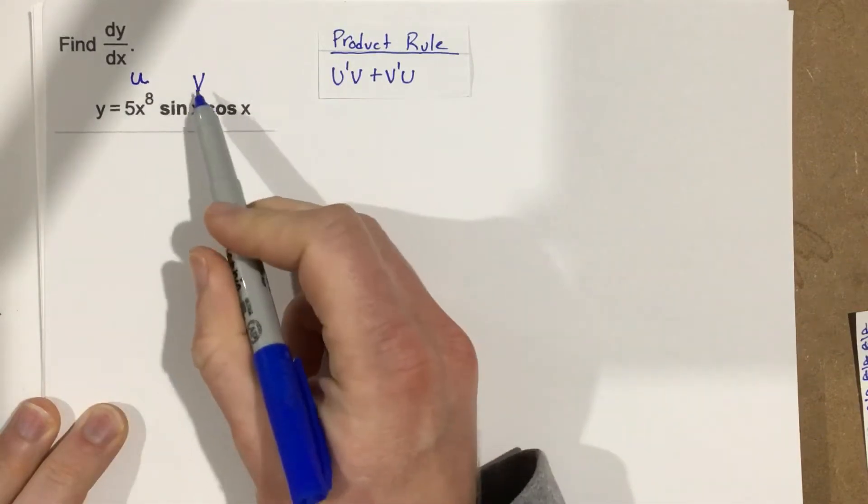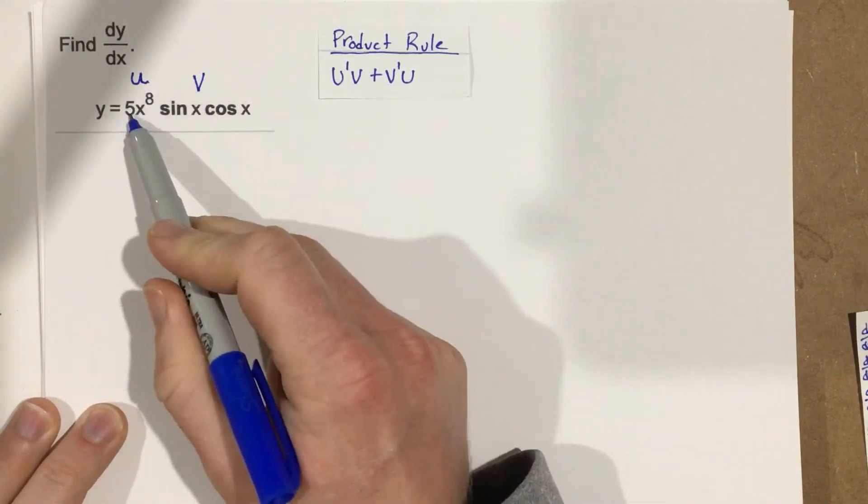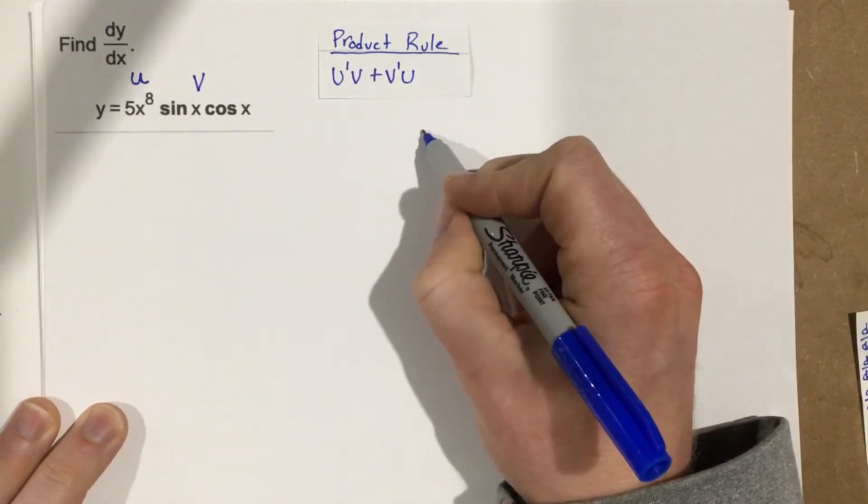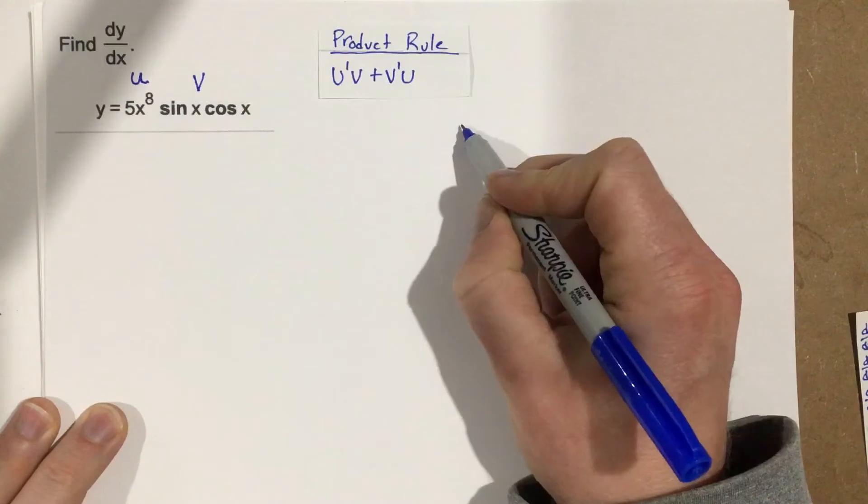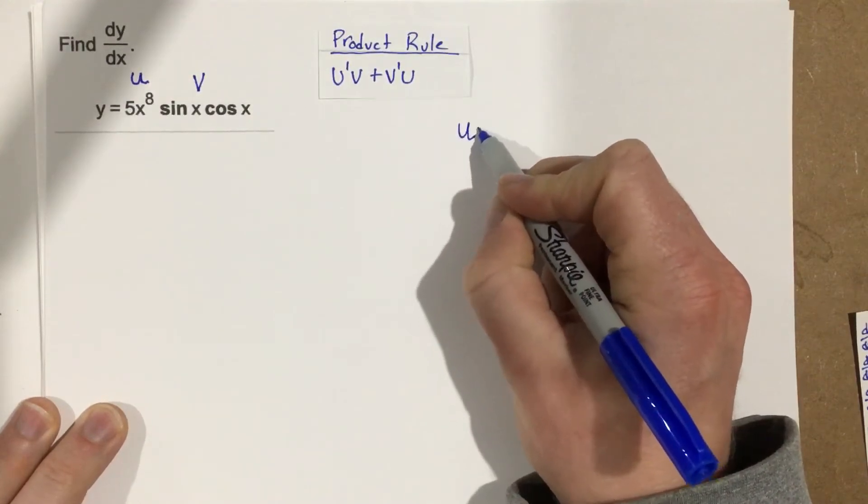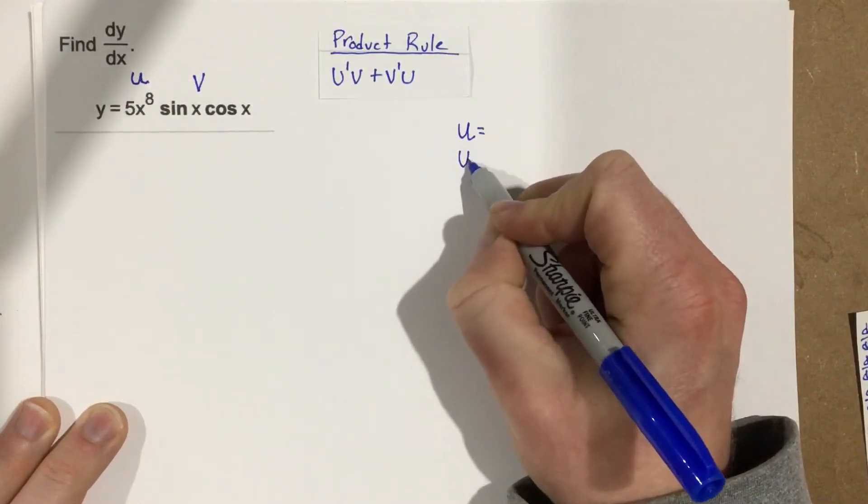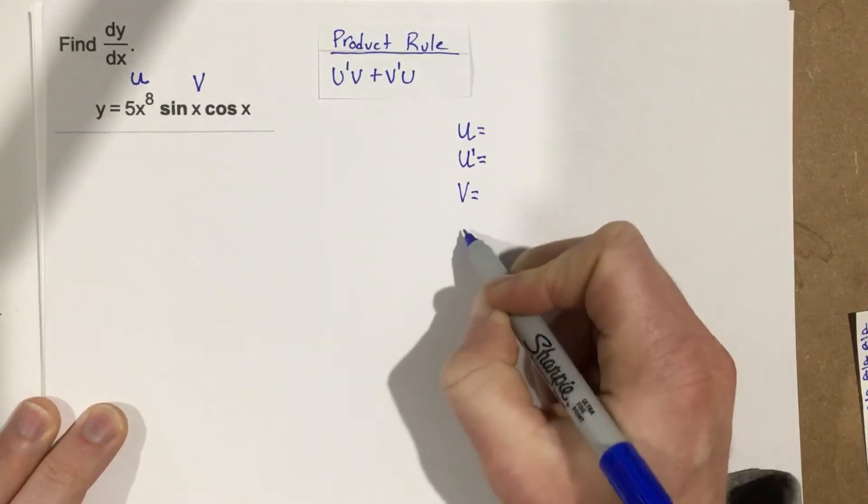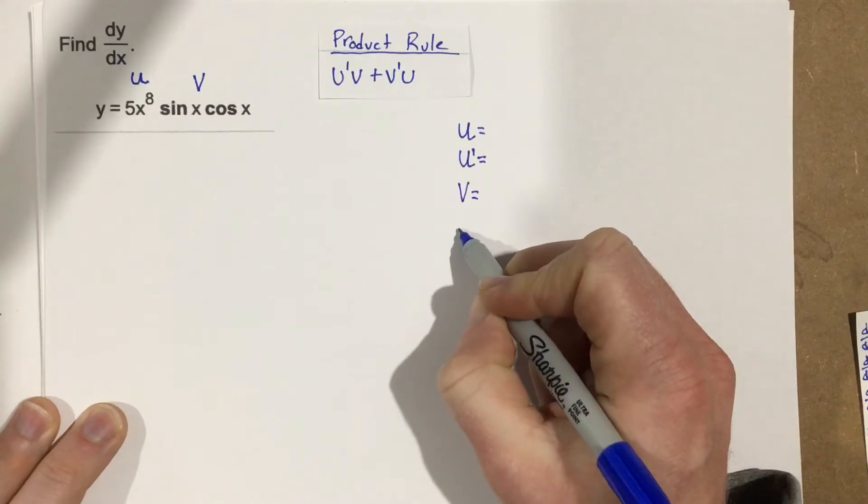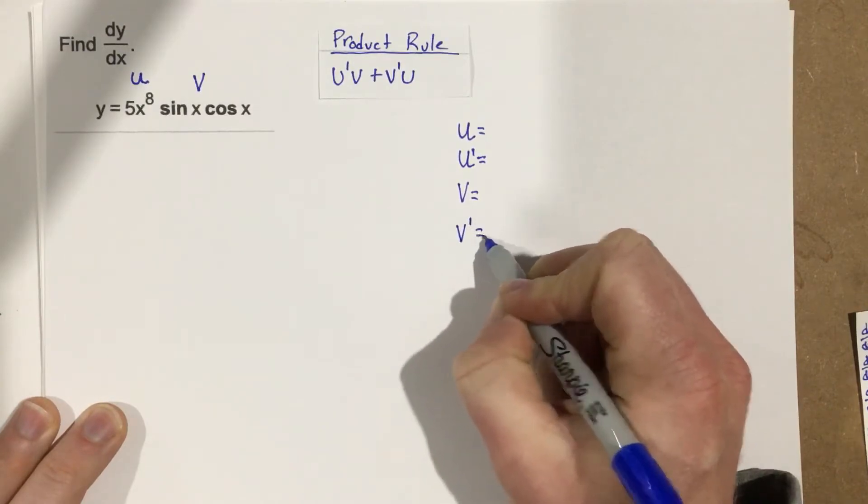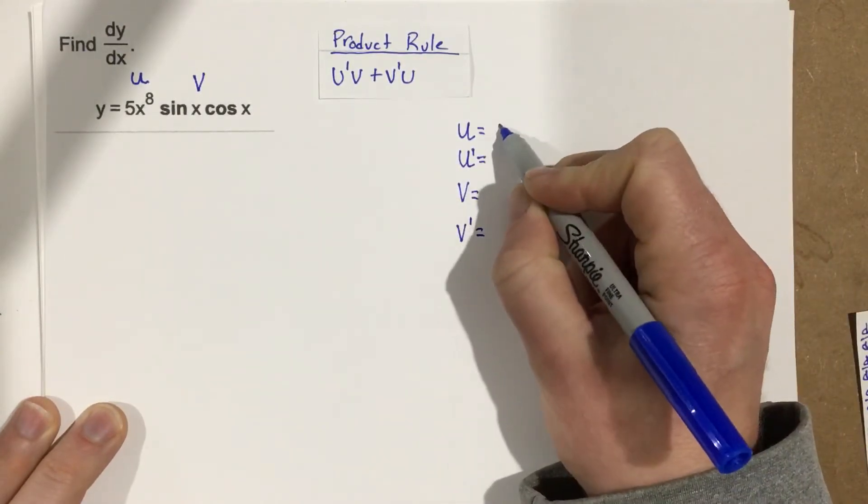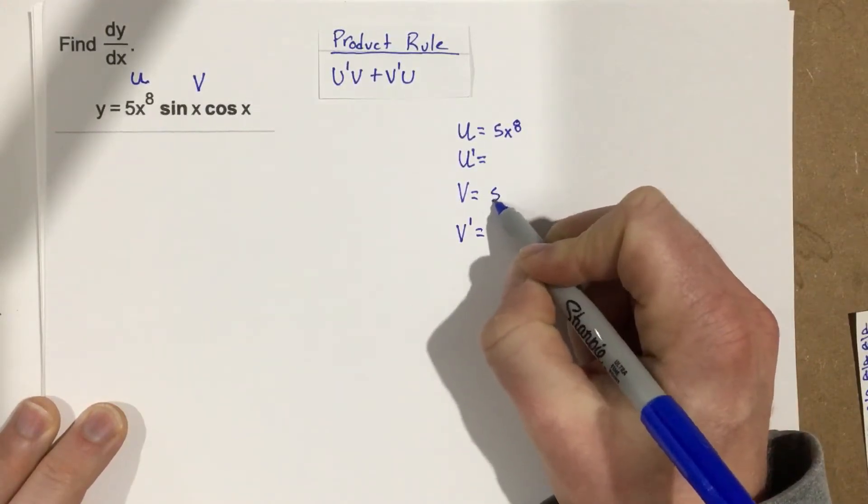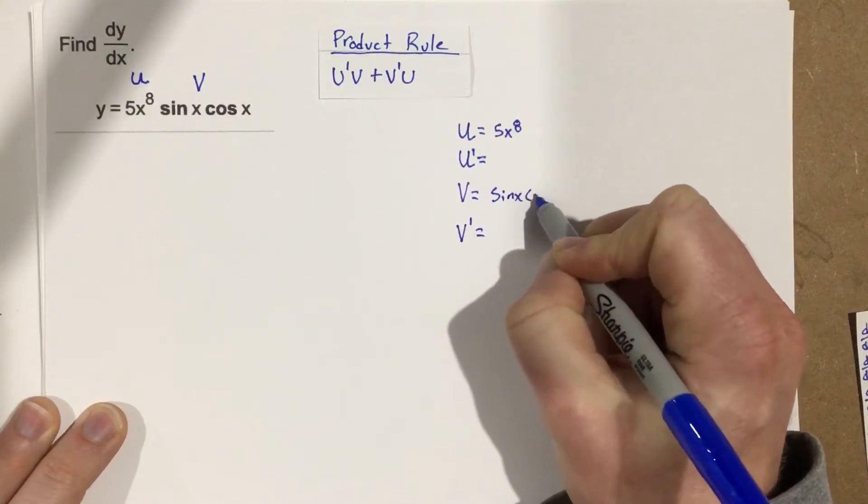So I'm going to name v to be sine x cosine x, and u to be 5x to the 8th. I'm going to go ahead and write this out here: u, u prime, v, and then v prime. Now u is going to be 5x to the 8th, and v is going to be sine x cosine x.